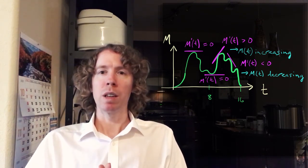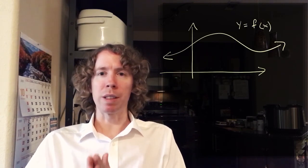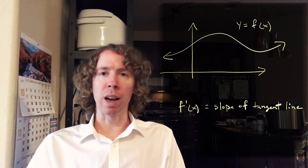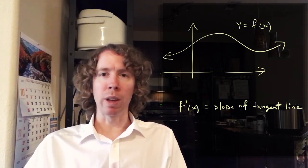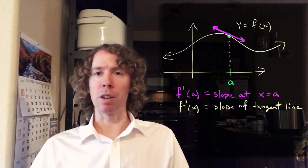So the derivative of a function Y equals F of X is the slope of the tangent line at X. And so if you plug in a value of X into the derivative, you get out a number. That number is the slope of the tangent line at that specific X value.